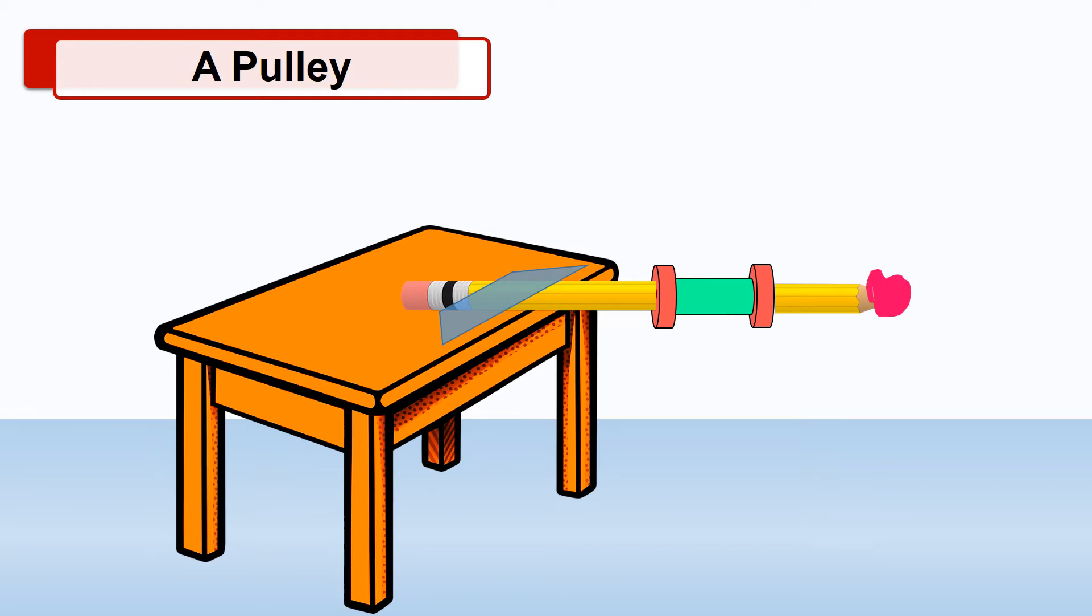Put a lump of the play dough on the tip of the pencil so that the reel does not come off. Draw the thick thread having the eraser at one end over this reel. Here, you can see that when we lift the eraser tied at the other end, it gets lifted up. Such a device is called a pulley.